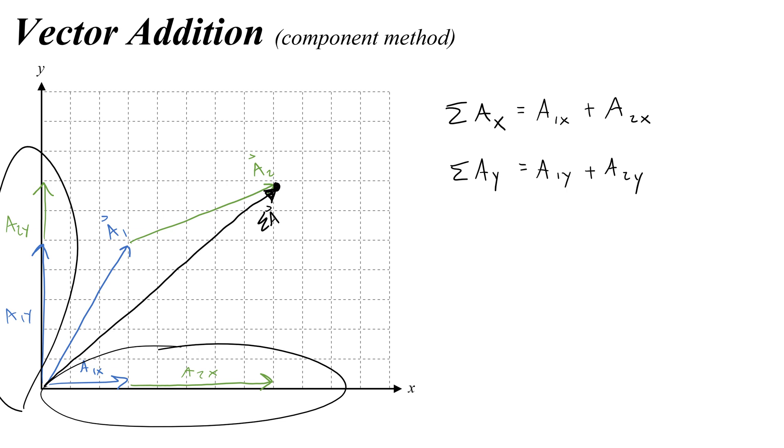Then I use those to make the components of my resultant, which of course I could draw as a right triangle where this would be sigma ax and this would be sigma ay.